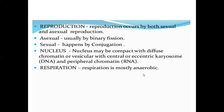Reproduction: reproduction occurs by both sexual and asexual methods. Asexual reproduction is usually by binary fission. Sexual reproduction happens by conjugation. Nucleus: the nucleus may be compact with diffuse chromatin, or vesicular with central or eccentric karyosomes containing DNA and peripheral chromatin RNA.